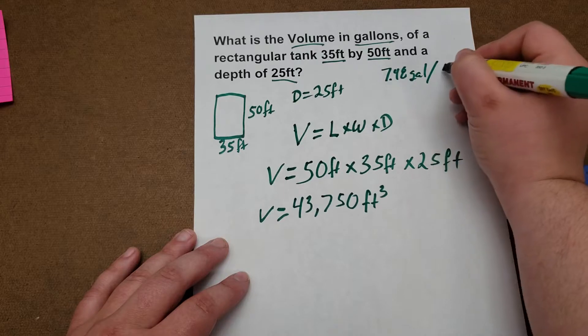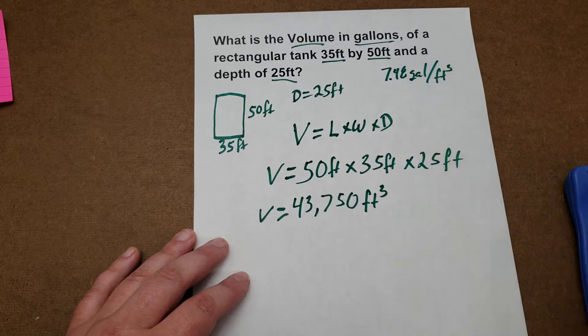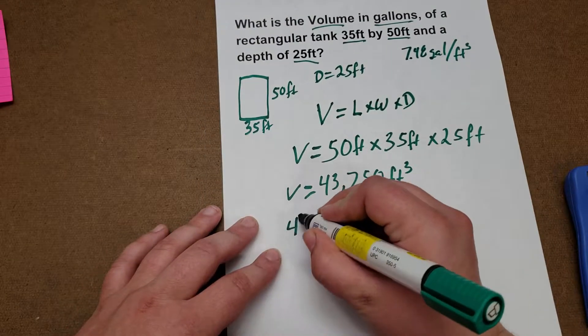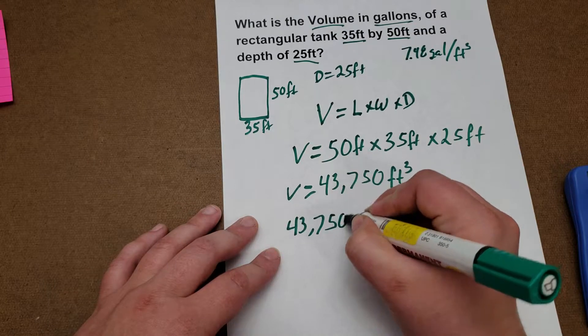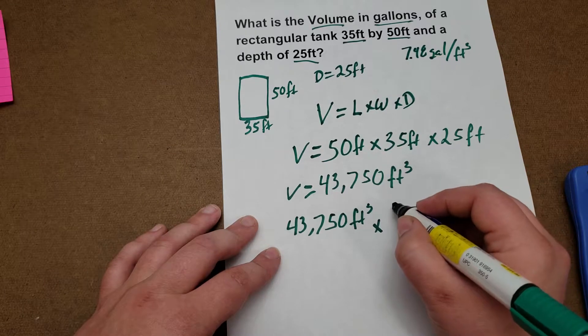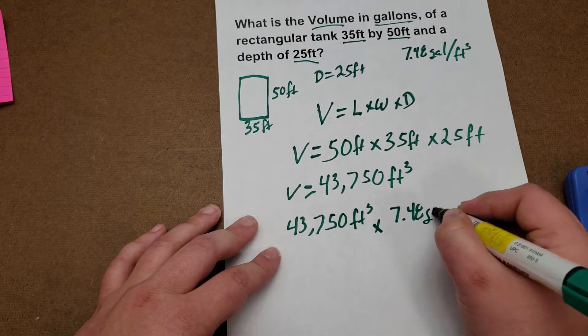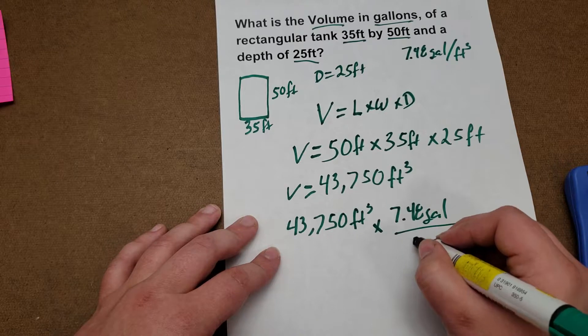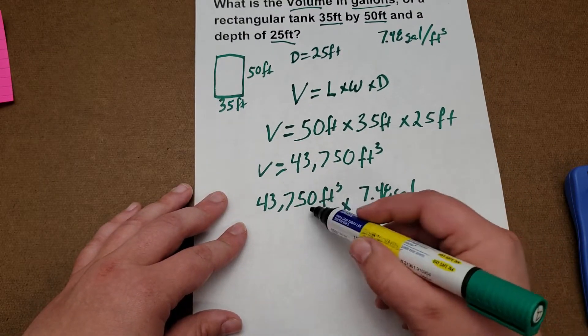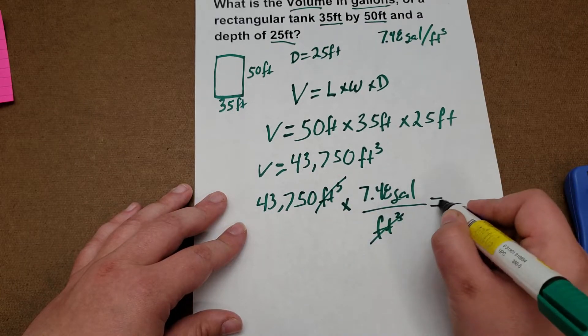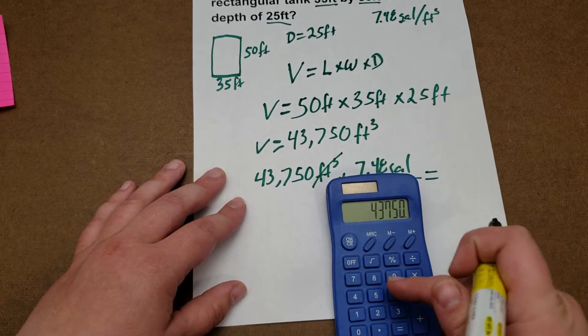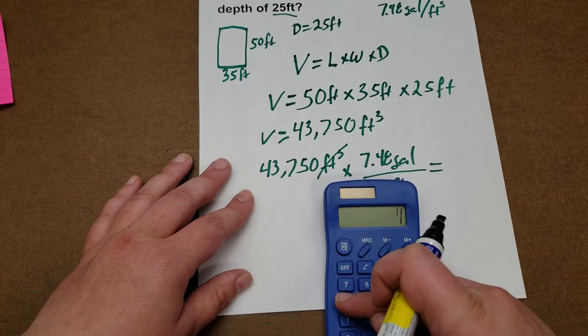So we'll take 43,750 feet cubed, we're going to multiply it by 7.48 gallons per foot cubed. So always make sure our units cancel, so we have cubic feet canceling, our answer will be in gallons. So we'll take that number, multiply it by 7.48.